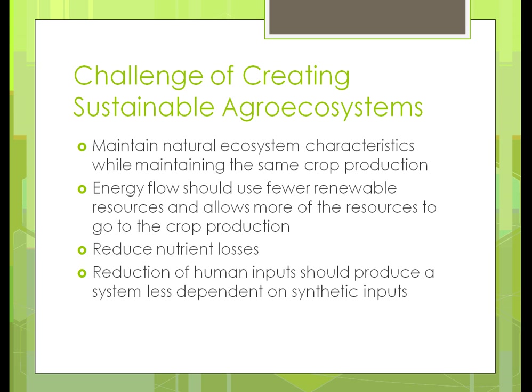One of our challenges is maintaining natural ecosystem characteristics. We've gotten away from that by using all the synthetic things. We still want to increase ecosystem productivity naturally while keeping crop production up at those 250–300 bushels per acre rates. The problem is we don't yet have crops that will do that organically, but that's what is being worked on. Energy flow should mean using fewer non-renewable resources — not using synthetic fertilizers, not using as much mechanization — to help make a more natural ecosystem.